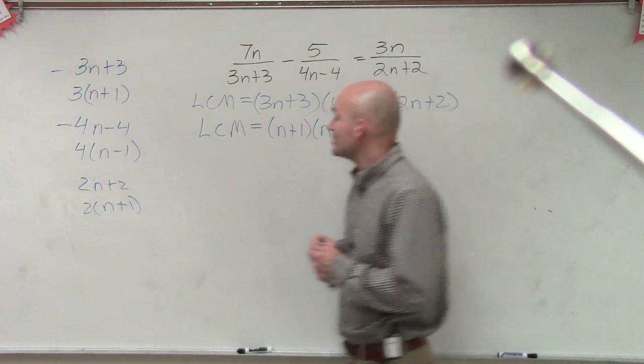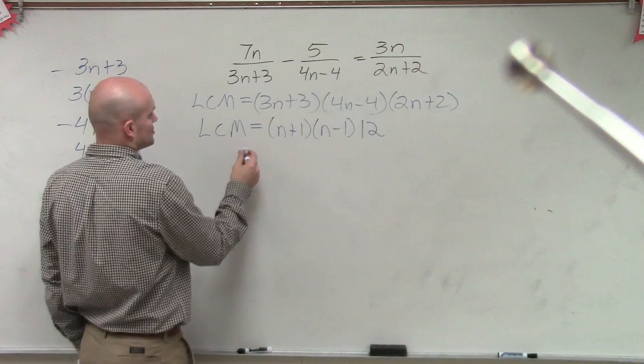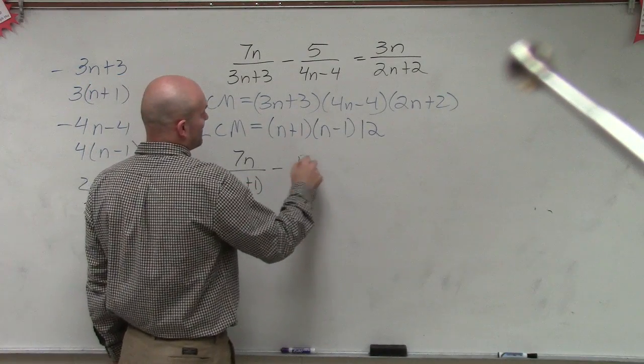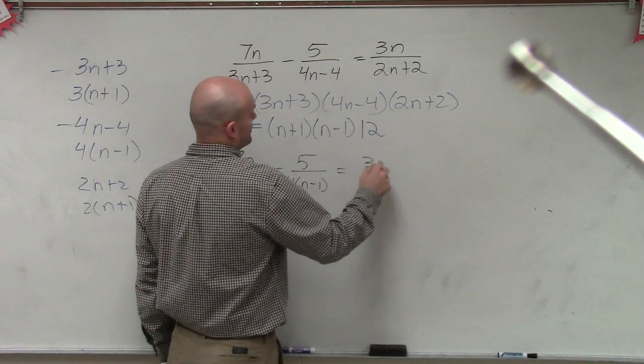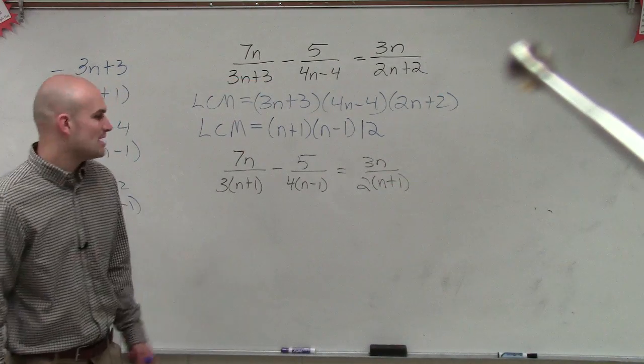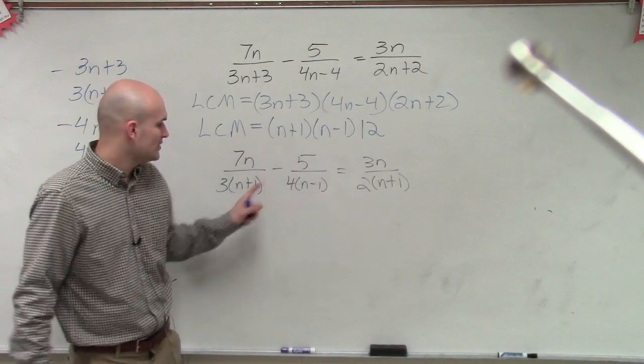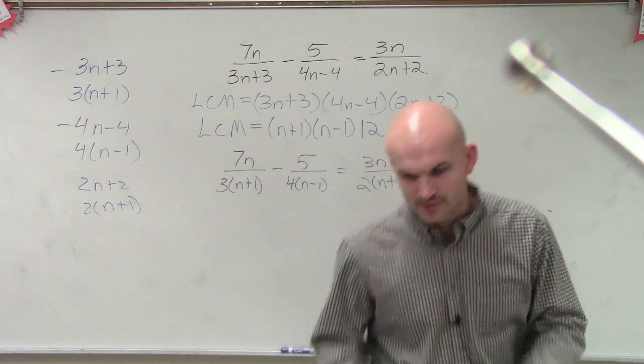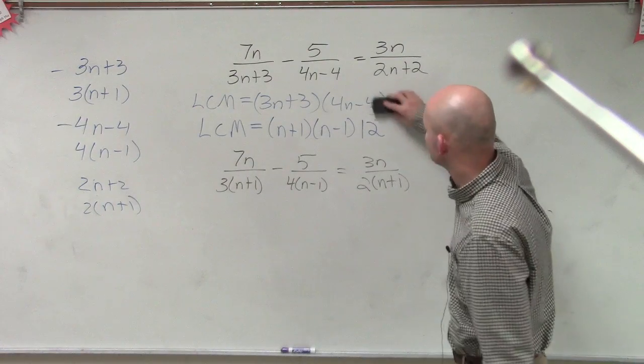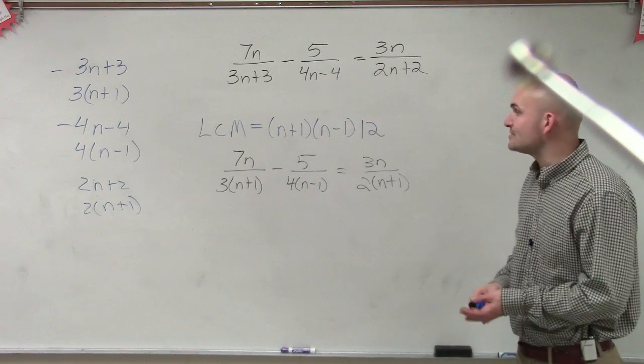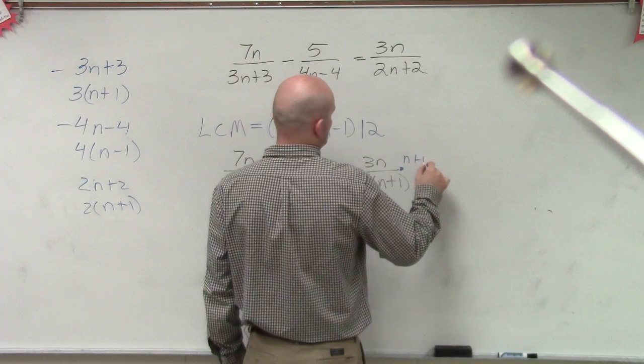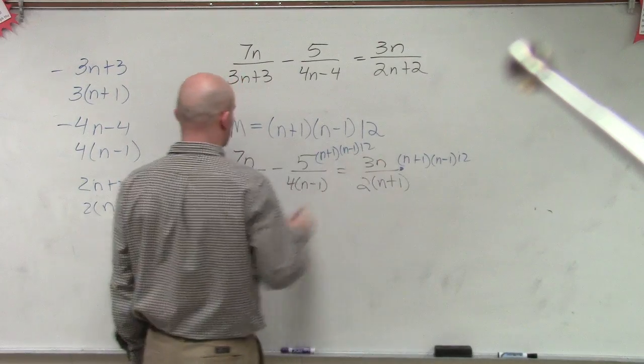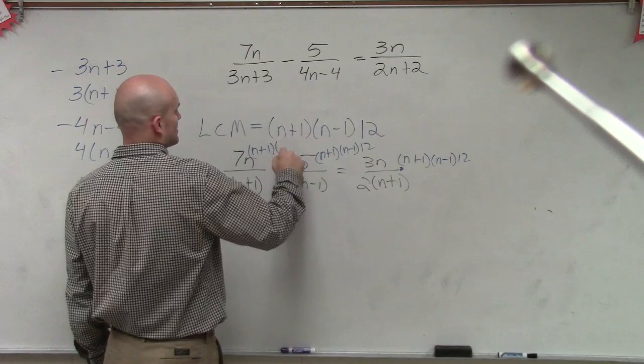So rather than multiplying every single term times this, which just might be your initial reaction, look to factor this stuff first so you guys can see my true LCM is n plus 1, n minus 1, and the number 12. So now what I'm going to do, ladies and gentlemen, is I'm going to first rewrite my problem with it factored. So the problem factored looks like this: 7n divided by 3 times n plus 1 minus 5 over 4 times n minus 1 equals 3n over 2 times n plus 1.